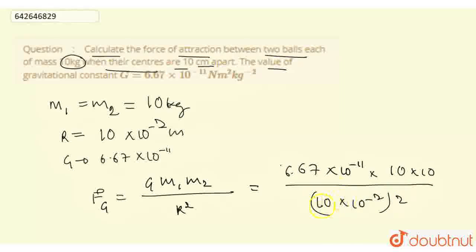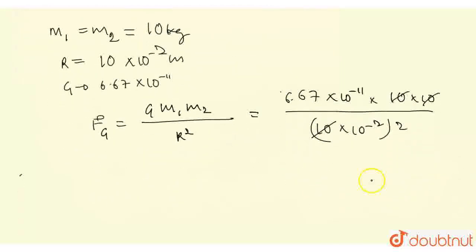Okay. So, if we simplify it, this and this will cancel. Then our answer will be 6.67 × 10^-7 newton.